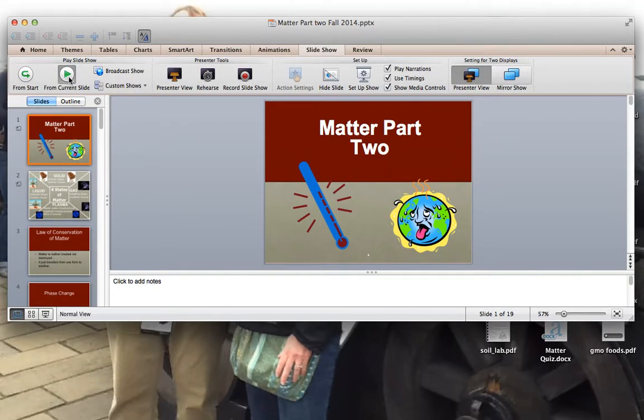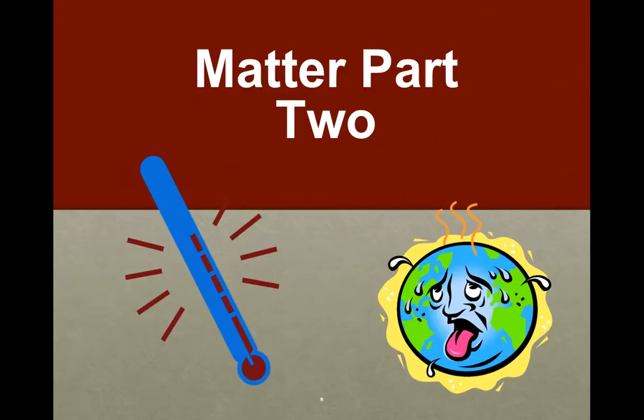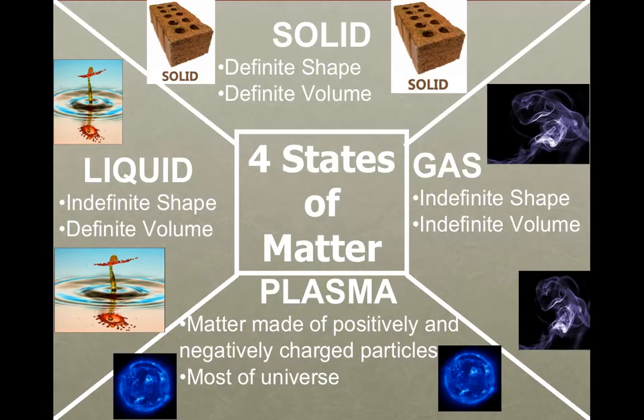Our second PowerPoint slide is talking about matter part two. There are basically four states of matter: solid, liquid, gas, and plasma. Let's start with the easiest, which is a solid. Solids, like the brick up here, have a definite shape, and if I measure the volume I could do length times width times height to find the volume of that particular object.